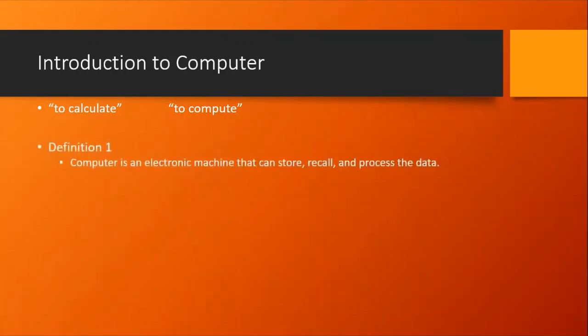Let us try to understand the definitions. Here I have put up different definitions. The first and very simple way of defining a computer could be that a computer is an electronic machine that can store, recall and process the data. We say that a computer is an electronic device or electronic machine because the components of the computer are made up from electronic items. So we call it an electronic machine or an electronic device.